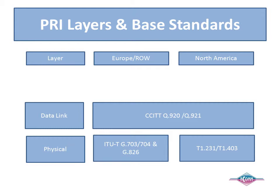LAPD, or Link Access Protocol Channel D, is defined by these standards. It works in ABM, or Asynchronous Balanced Mode, and that means that all nodes are peers and can initialize, send frames, and handle errors as needed. There is one bit in the HDLC packet that identifies user and network-side ISDN.